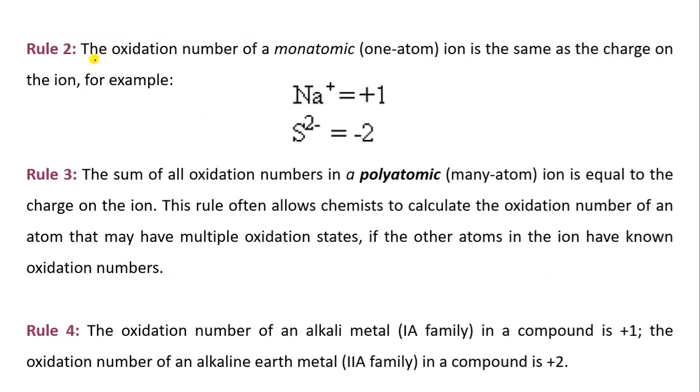Now rule 2. The oxidation number of a monoatomic ion is the same as the charge on the ion. For example, if there is Na+, the oxidation number is plus 1. For S2-, the oxidation number is minus 2.